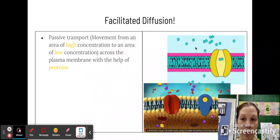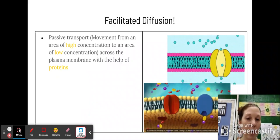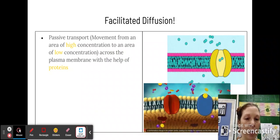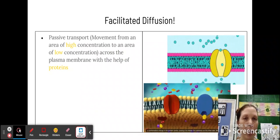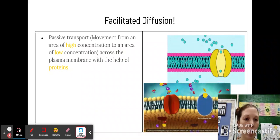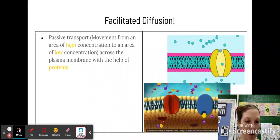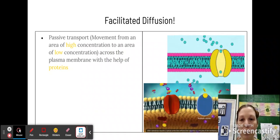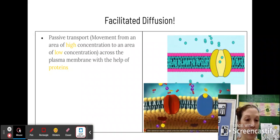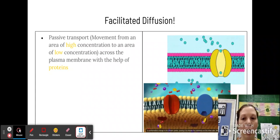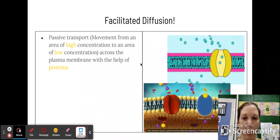We have facilitated diffusion, which is another form of passive transport, but it's using those channel or carrier proteins on the membrane to allow for that to happen. So that means you probably are dealing with bigger particles than what can just fit through the membrane on its own. So again, it is still passive, so it always flows from high to low across the membrane, but specifically with the help of proteins.